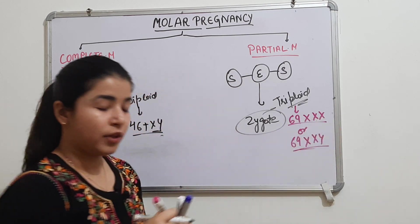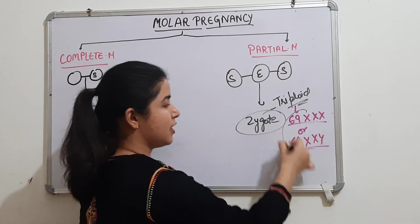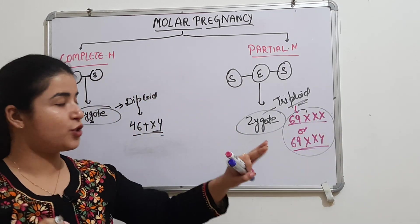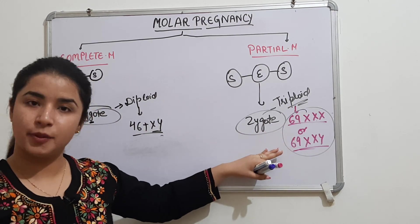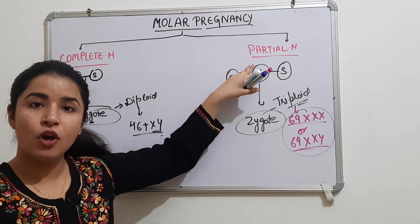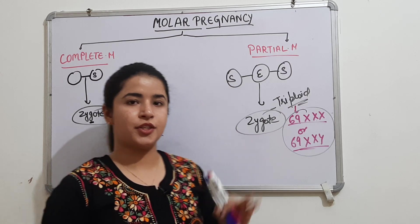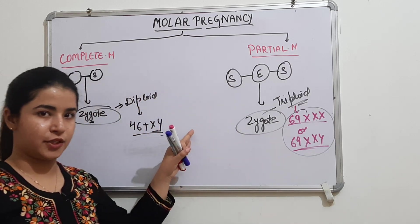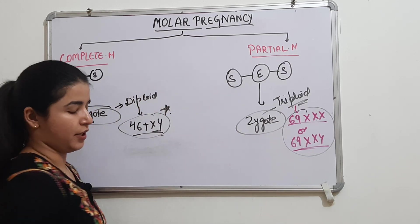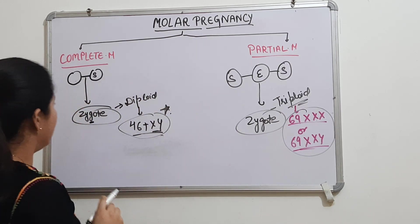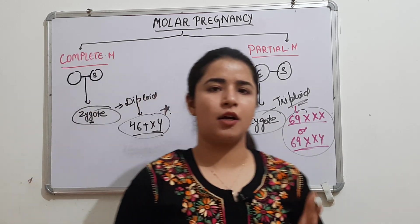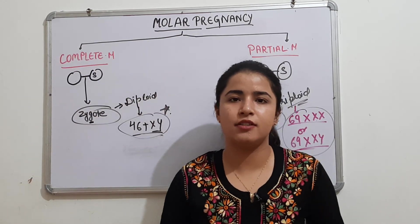Please remember these chromosomal formulas because they are frequently asked in exams: for complete mole it is 46XY, and for partial mole it is 69XXX or 69XXY. This is an important section to memorize.